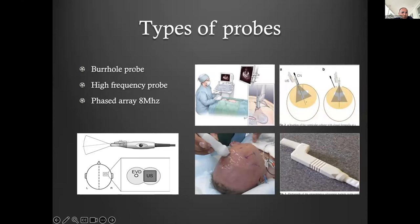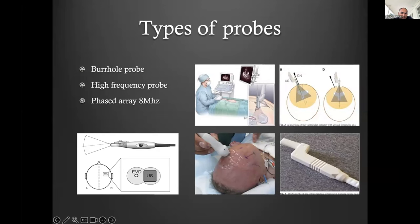The various types of probes include the burr hole probe, which some companies now have dedicated specifically for catheter placement — the benefit being you don't need to increase the size of your burr hole, and there are little guides in the groove of the catheter. The BK probe suggests you might need to widen your burr hole slightly, but I don't do this routinely because most of the kids we treated had an open anterior fontanelle, so we could just do the ultrasound through it.